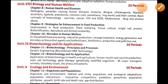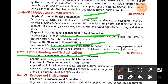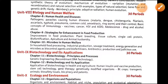The next unit is Biology and Human Welfare — covering human health and diseases, how to use biology, biotechnology, and microorganisms. Then unit four is Biotechnology and its Applications — what is the principle and what are the applications.